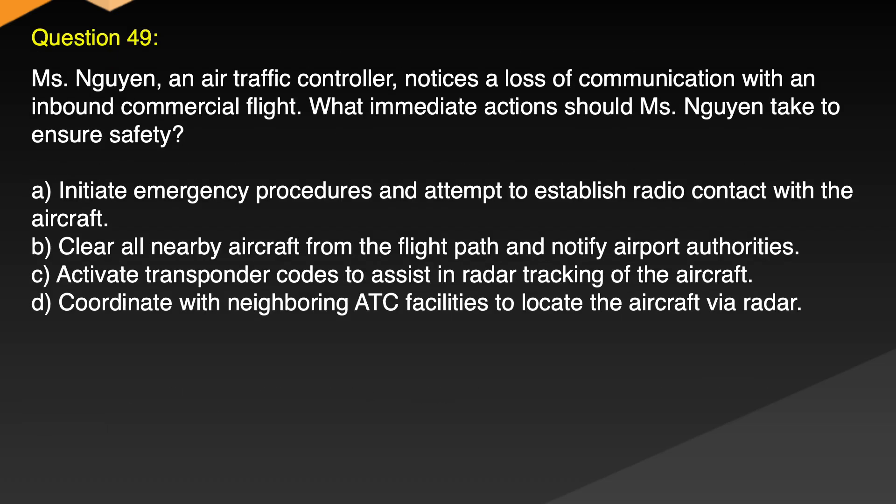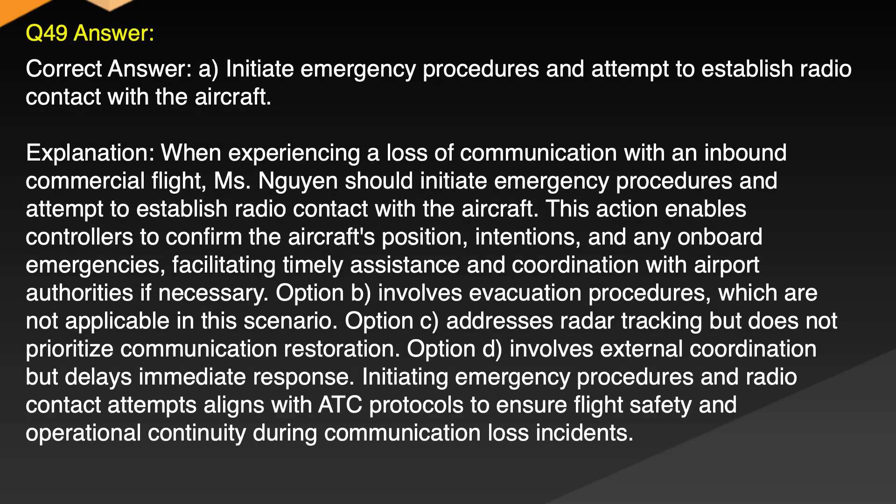Question 49. Ms. Nguyen, an air traffic controller, notices a loss of communication with an inbound commercial flight. What immediate actions should Ms. Nguyen take to ensure safety? A. Initiate emergency procedures and attempt to establish radio contact with the aircraft. B. Clear all nearby aircraft from the flight path and notify airport authorities. C. Activate transponder codes to assist in radar tracking of the aircraft. D. Coordinate with neighboring ATC facilities to locate the aircraft via radar. Correct answer: A. Initiate emergency procedures and attempt to establish radio contact with the aircraft.